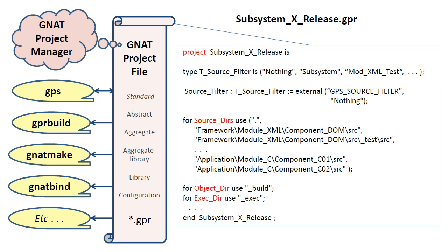The first thing to notice is that the project does not specify a qualifier after the keyword project. According to the documentation, if a qualifier is not specified, then by default it is of type standard. However, by definition, a standard project is a non-library project with sources.